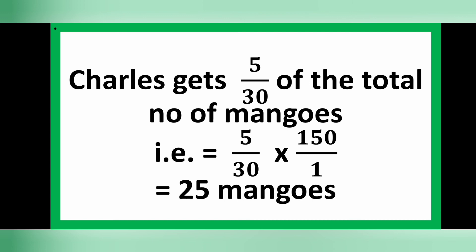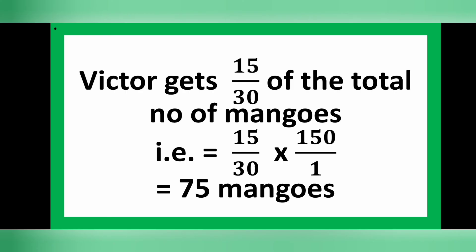For Victor: he gets 15 over 30 of the total number of mangoes, that is 15 over 30 multiplied by 150. So Victor gets 75 mangoes.